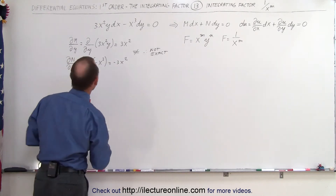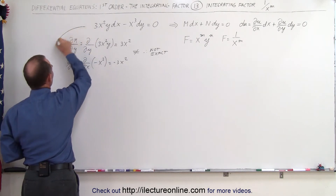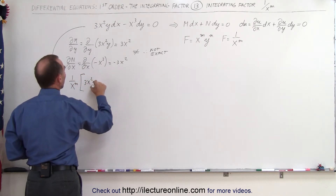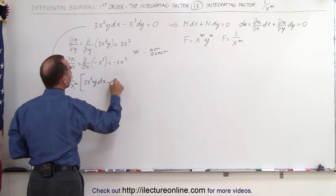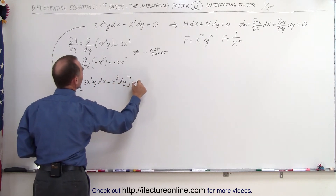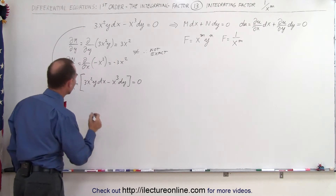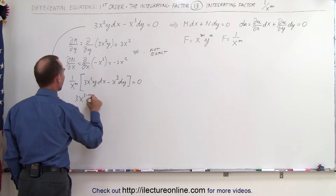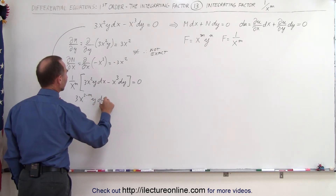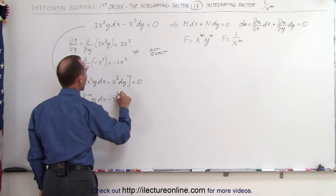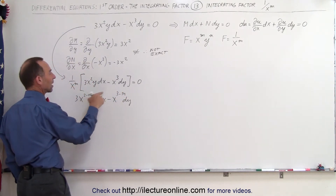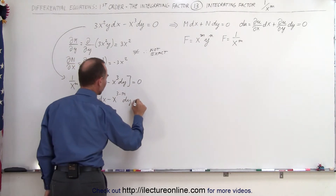We're going to use it as 1 over x to the m. So we're going to take our equation and multiply times our integrating factor 1 over x to the m times 3x squared y dx minus x cubed dy equals 0. Multiplying through we get 3x to the 2 minus m power times y times dx minus x to the 3 minus m power times dy equals 0, since dividing means we subtract m from the exponent.